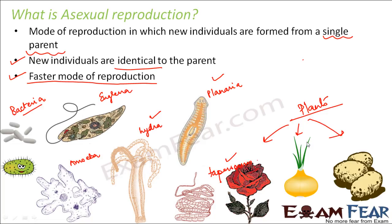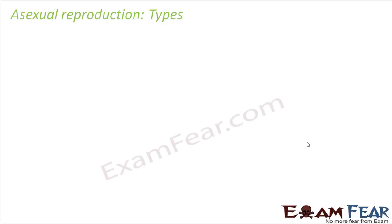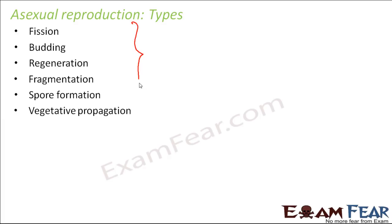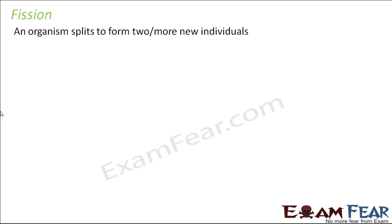Some plants reproduce both sexually as well as asexually. Now let us talk about the various types of asexual reproduction. The important types are fission, budding, regeneration, fragmentation, spore formation, and vegetative propagation. In this lesson we will discuss fission, budding, regeneration, and fragmentation; the rest will be covered in higher classes.